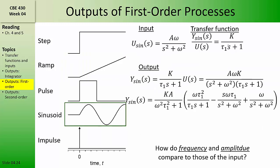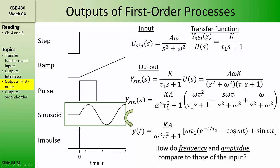When we feed a sinusoidal input to a first-order transfer function, we obtain an output that has three terms in the partial fraction expansion, multiplied by a magnitude of ka over (omega squared tau squared plus one), where a and omega are the amplitude and frequency of the sine function. Inverting back to the time domain gives a weighted sum of sine and cosine functions with an exponential decay, so this exponentially decays to a phase-shifted sine wave.